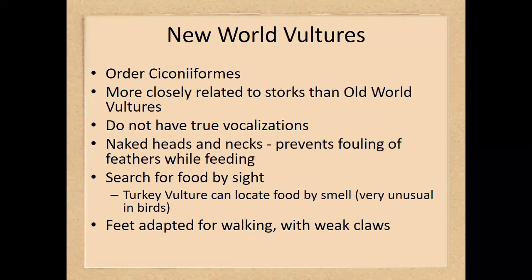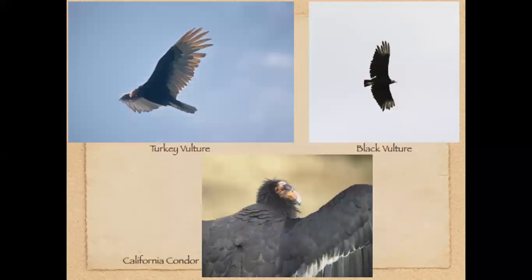New world vultures are the vultures we have in North America. They are more closely related to storks than to the vultures found in the old world. They have naked heads and necks with no feathers, which allows them to decrease the bacterial load on their heads and keeps them healthier. They utilize both smell and sight to find food, and their feet are well adapted for walking but have very weak claws. Vultures are not going to kill their prey — they look for dead food to eat. Shown here are the turkey vulture, the black vulture, and the California condor.